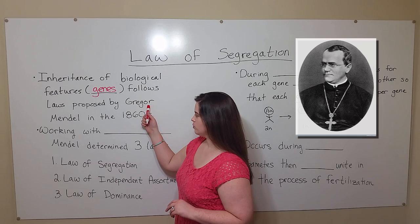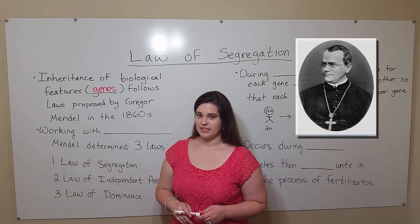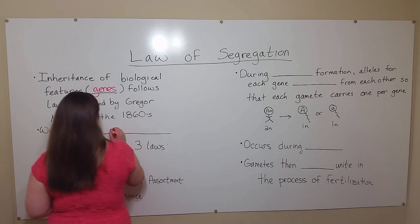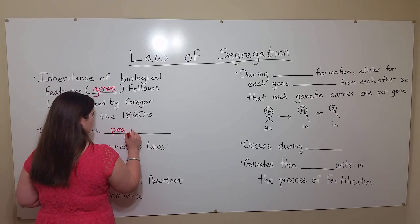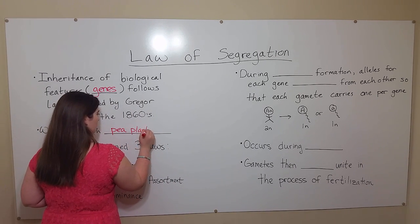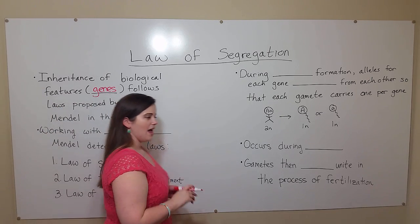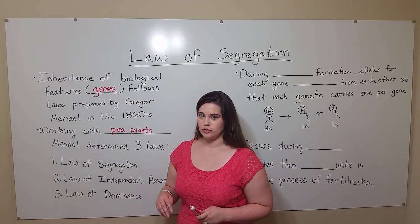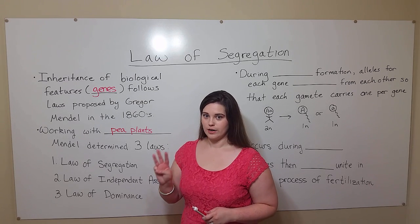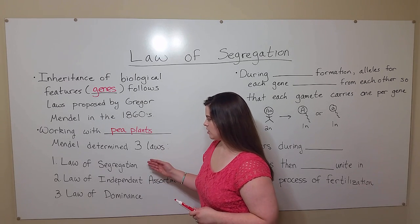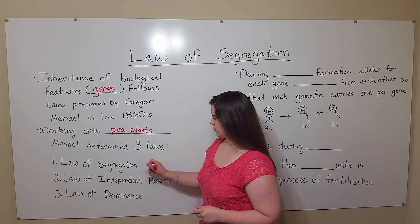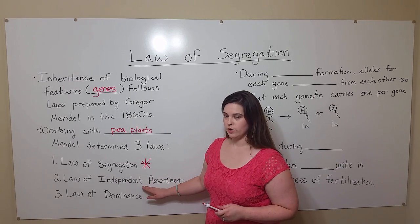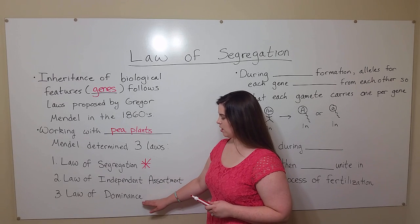These laws were first proposed by Gregor Mendel in the 1860s. He was working with pea plants, and it was his work with pea plants that allowed him to elucidate three different laws of inheritance: the law of segregation, which we're talking about today, the law of independent assortment, and the law of dominance.